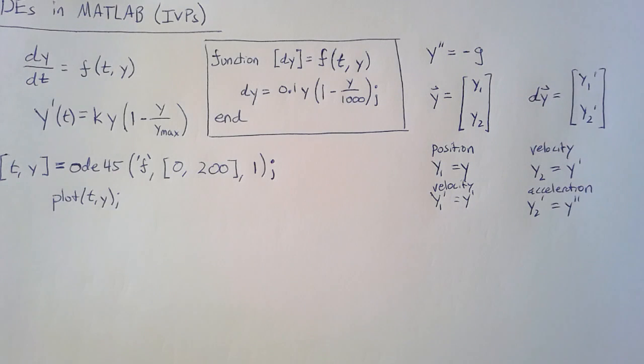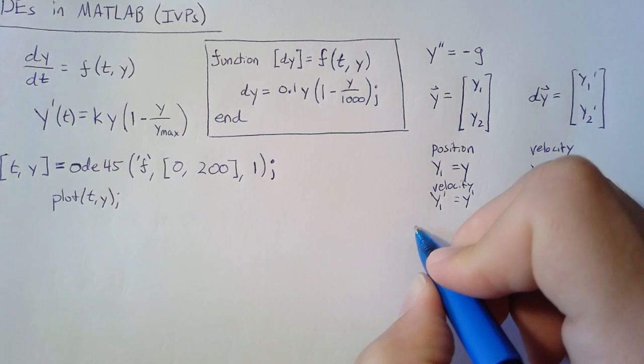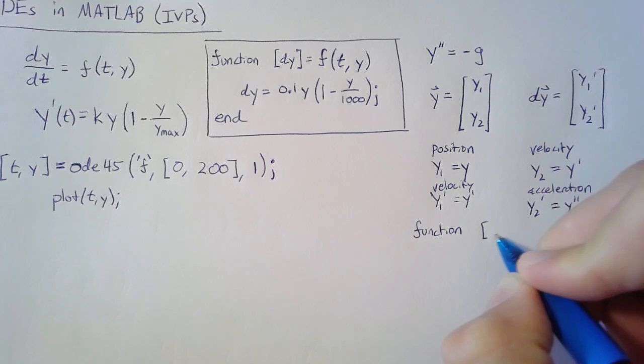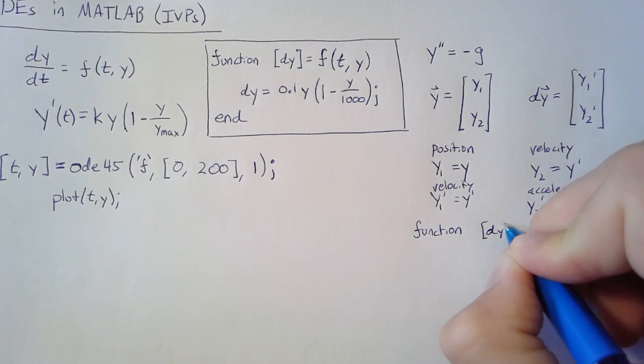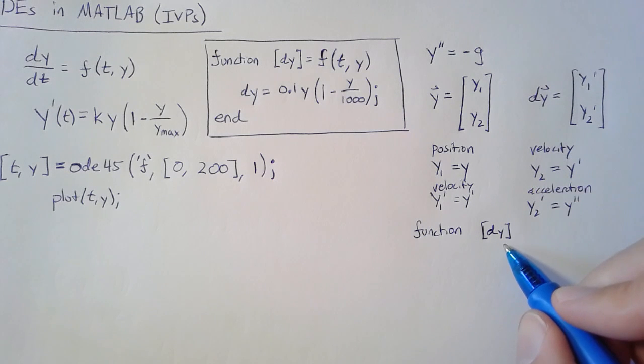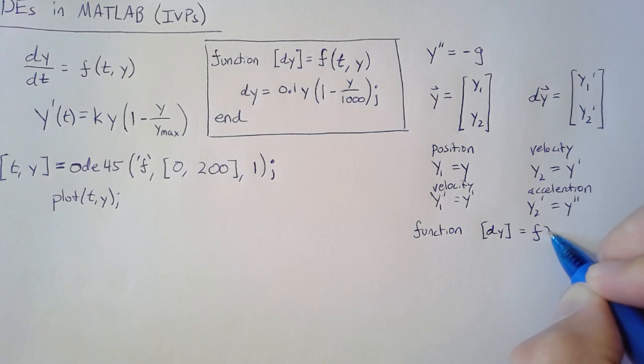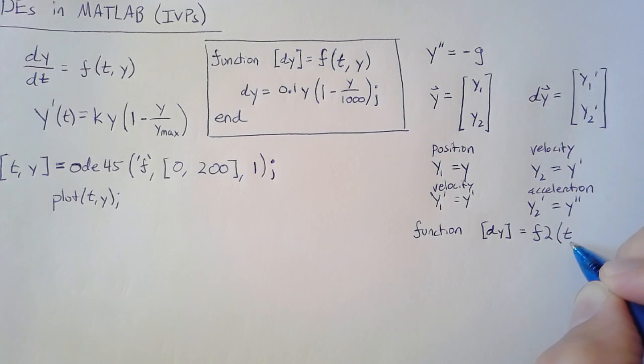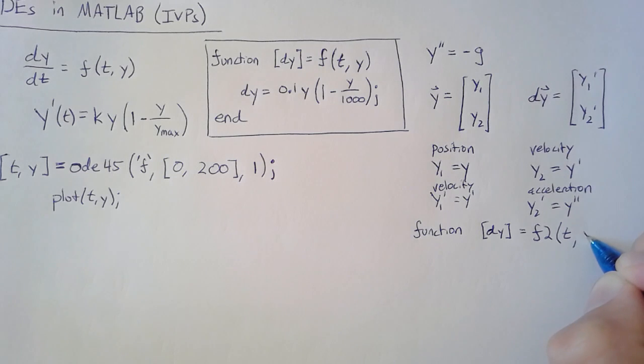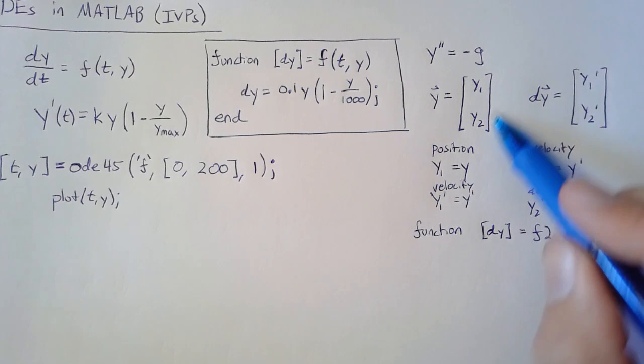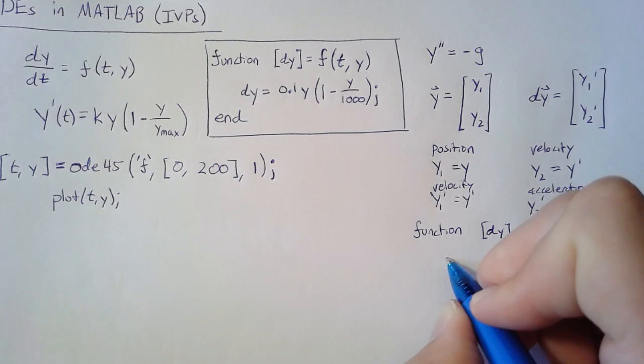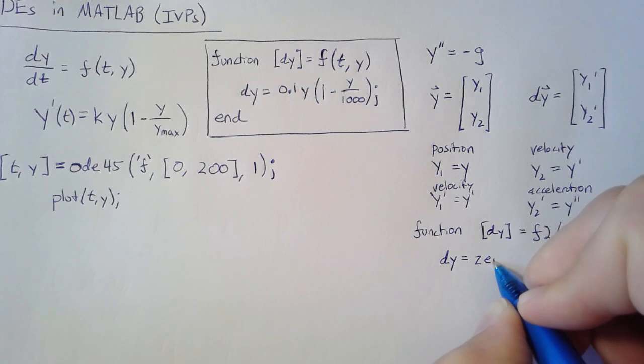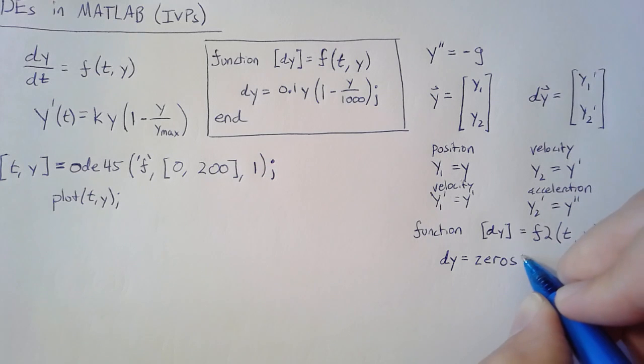Now let's write what the function is actually going to look like. It's going to start off the same way, where we have some function with dy as our output variable, but this dy now is going to be a column vector. We'll name it f2. This is a function of our independent variable t and our dependent variable y, which is a column vector. To make sure MATLAB spits out a column vector, we initialize dy as a column using the zeros command.